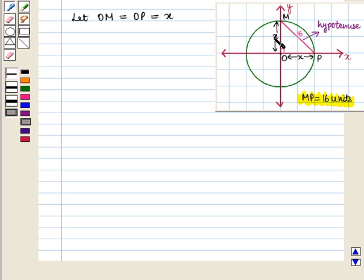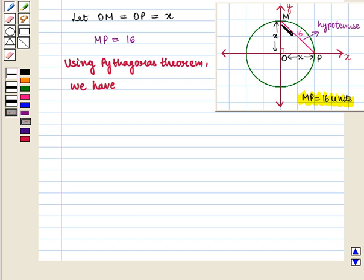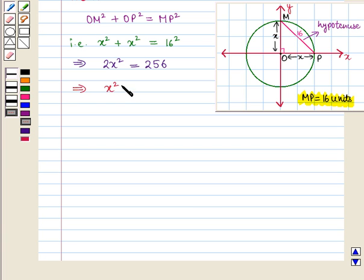So now we have to find the value of X. Now using Pythagoras theorem from the key idea, which implies that X square plus X square is 2X square which is equal to 16 square that is 256. Which implies that X square is equal to 256 by 2 that is X square is equal to 128.